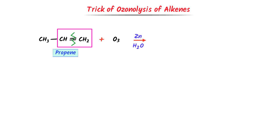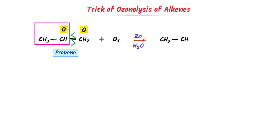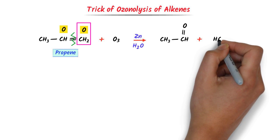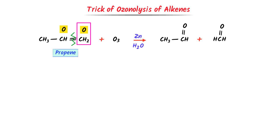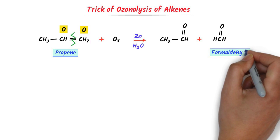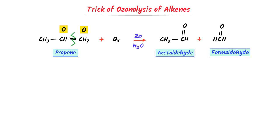After breaking the double bond, I write oxygen above the carbons on both sides of the double bond. I take CH3CHO and write it here: CH3 single bond CH, with oxygen double bonded to this carbon. Secondly, I take CH2O and write it here: HCH with oxygen double bonded to carbon. This is formaldehyde and this is acetaldehyde. Therefore, using ozone and zinc plus water, we can easily convert propene to acetaldehyde and formaldehyde.